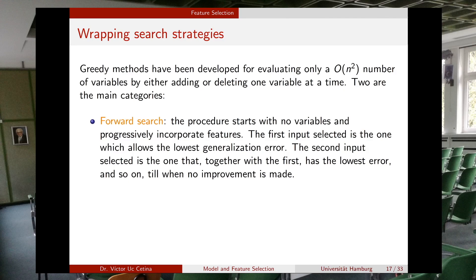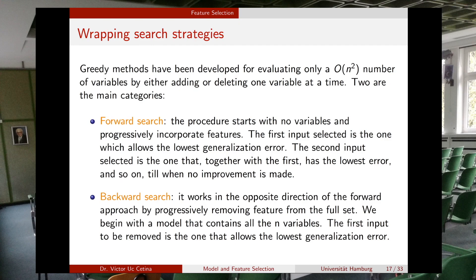You keep adding features as long as the performance is improving. When performance is no longer improving, the algorithm finishes. You can do the same in the opposite direction — this is called backward search, where you start with all features and delete one at a time, always calculating the error of each combination.